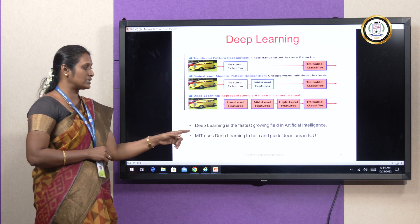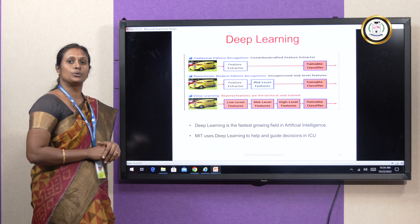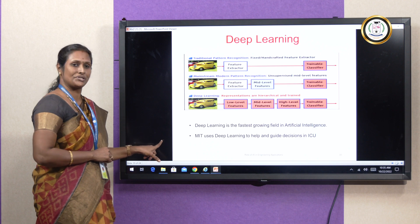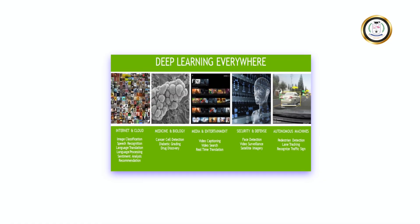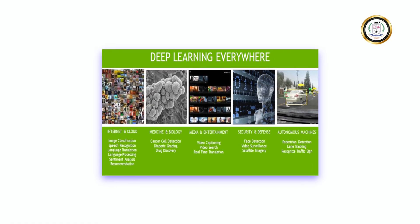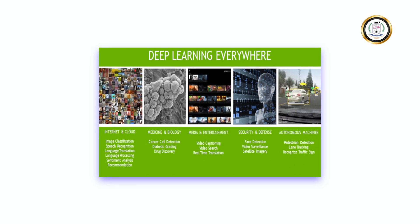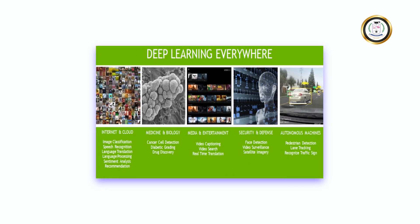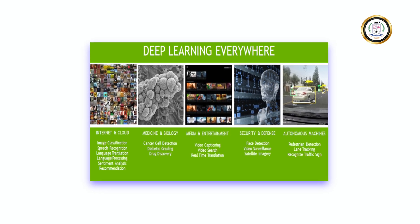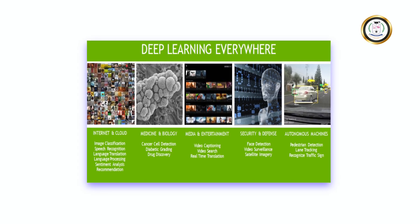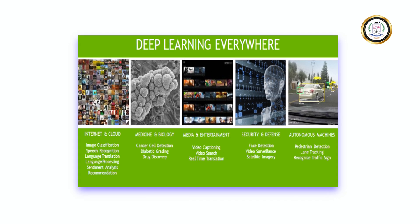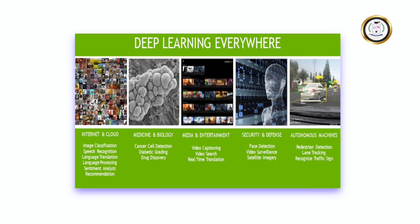That is why deep learning is the fastest growing field in artificial intelligence. MIT is also using deep learning to guide ICU persons for decision making. Deep learning is everywhere — in internet and cloud, in medical, in media, in security and defense, and in autonomous vehicle applications. These are a few of the applications using deep learning.